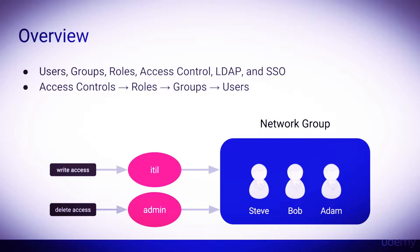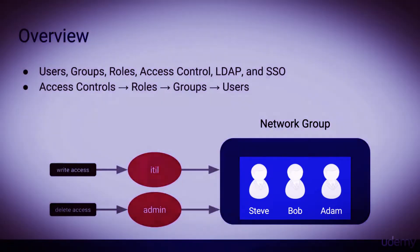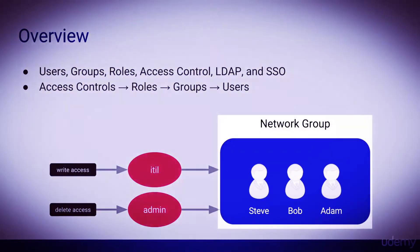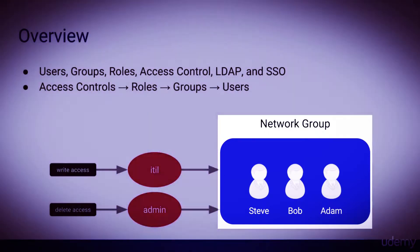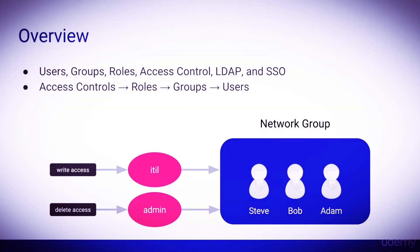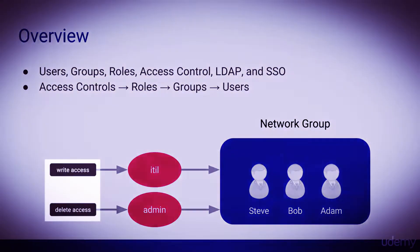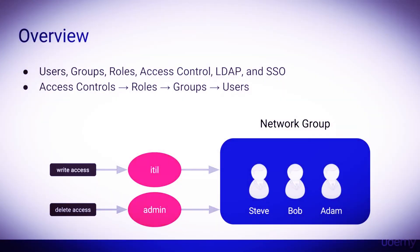In the diagram below, we have three users — Steve, Bob, and Adam — who belong to the network group. The network group has the ITIL and admin roles. The ITIL and admin roles each contain one or more access controls. In this example, the ITIL role contains access to write to records, and the admin role contains access to delete records.